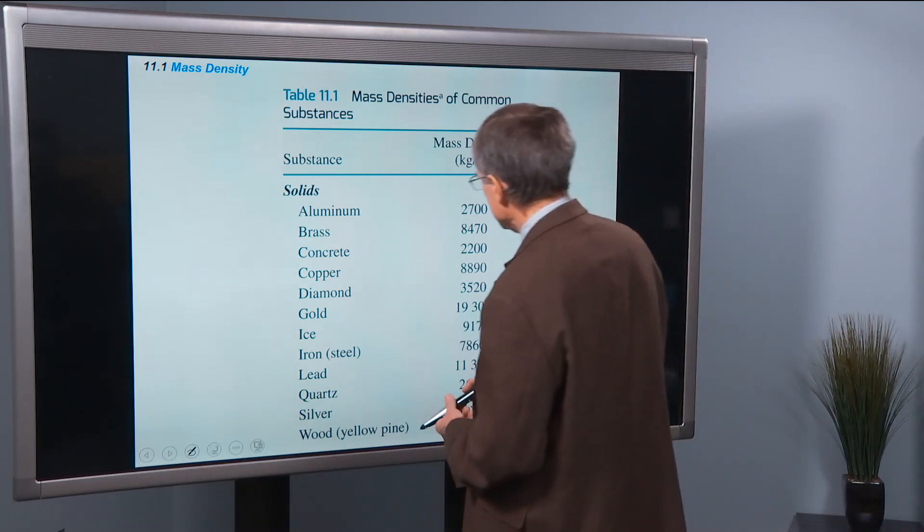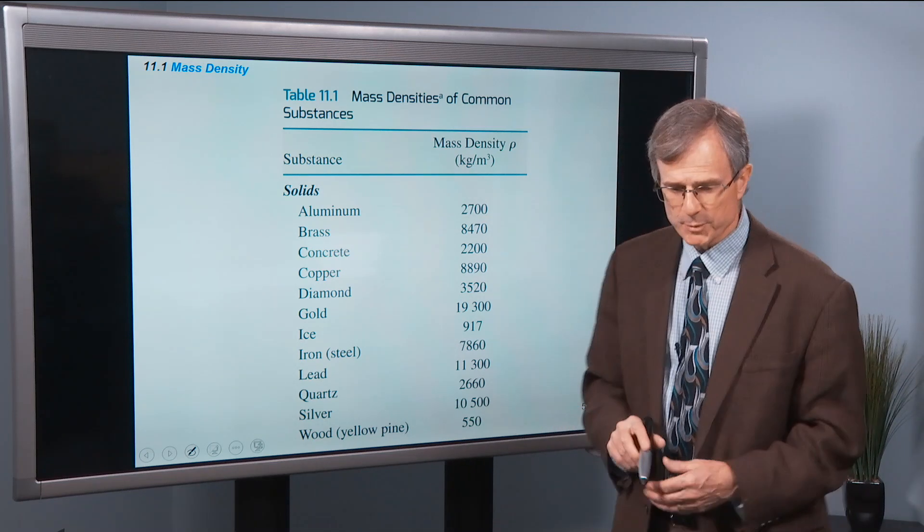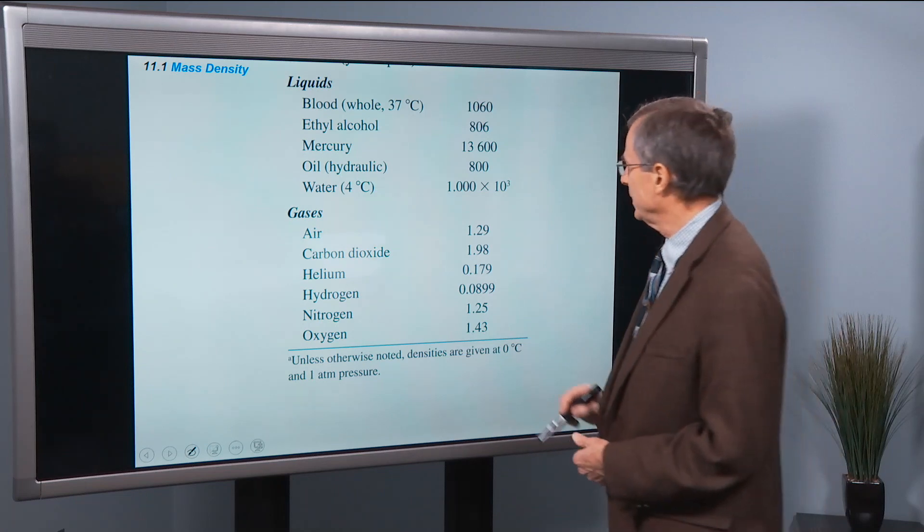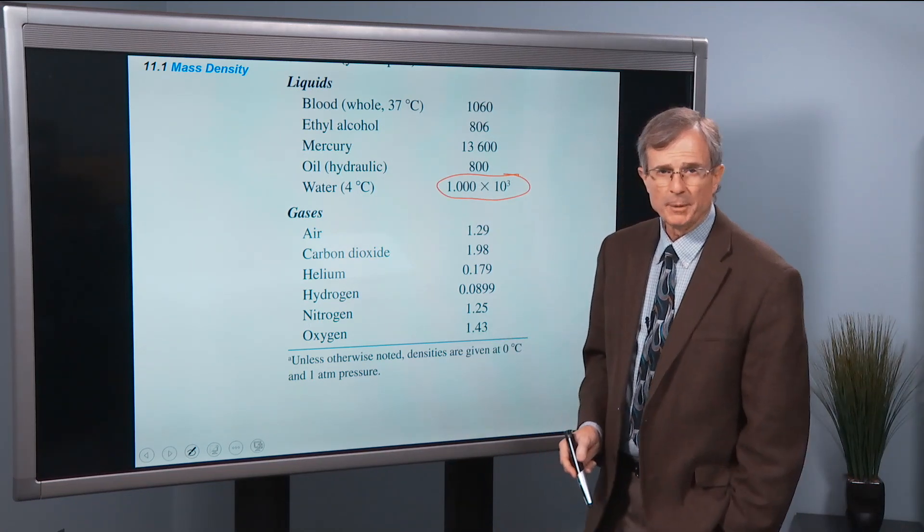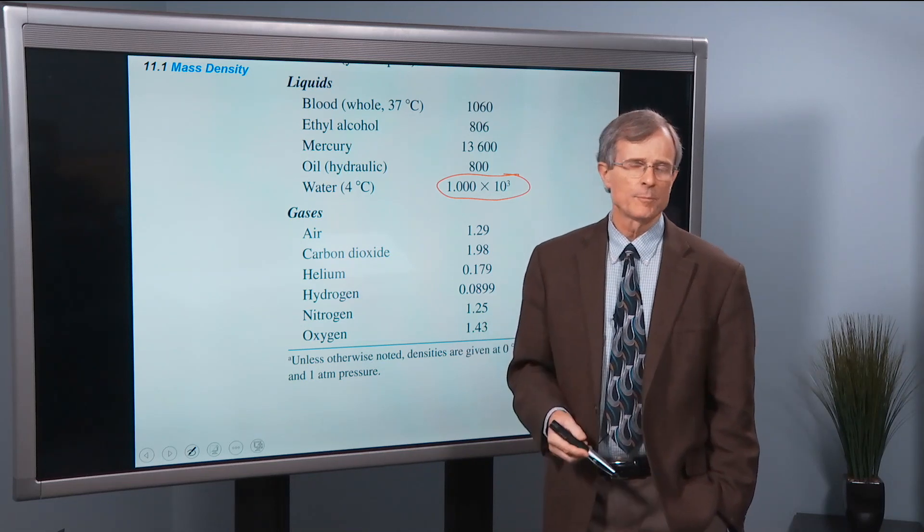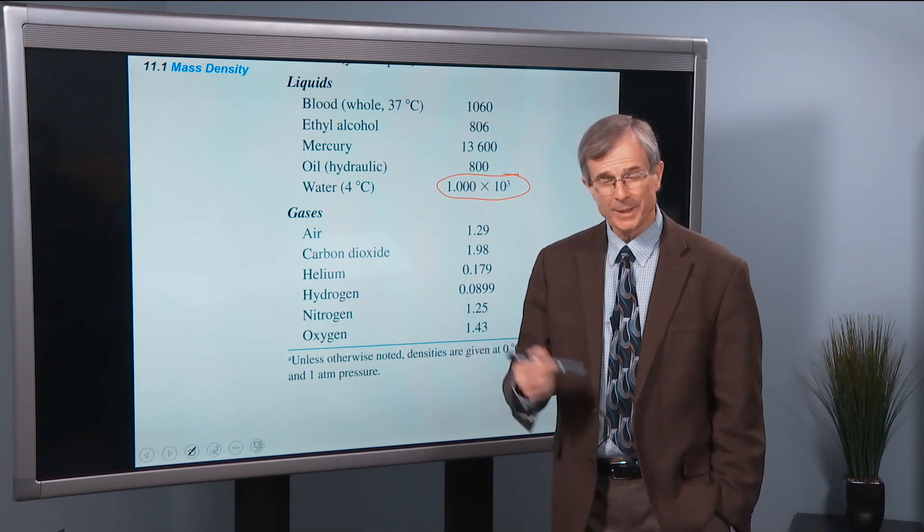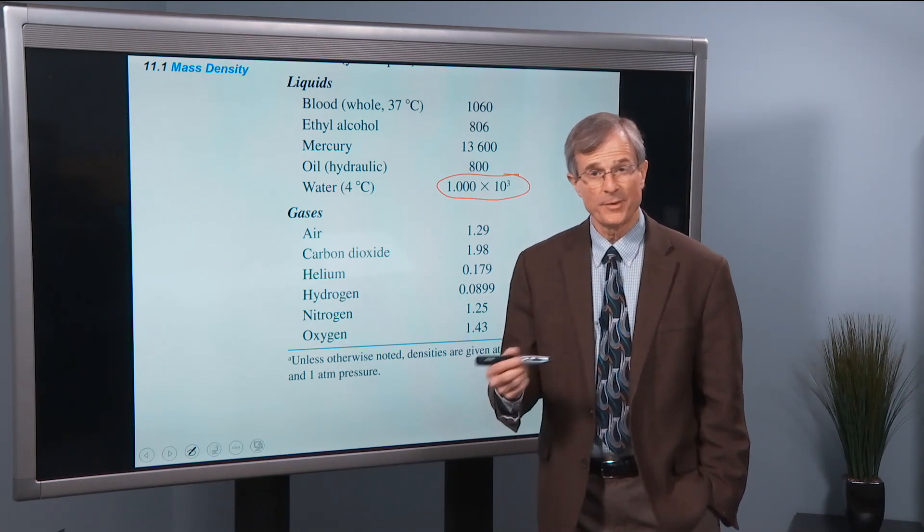Some typical densities, metals and solids are in the thousands of kilograms per cubic meter. Water is exactly a thousand kilograms per cubic meter, or one gram per cubic centimeter. So the difference between grams per cubic centimeters and kilograms per cubic meter is a factor of a thousand.